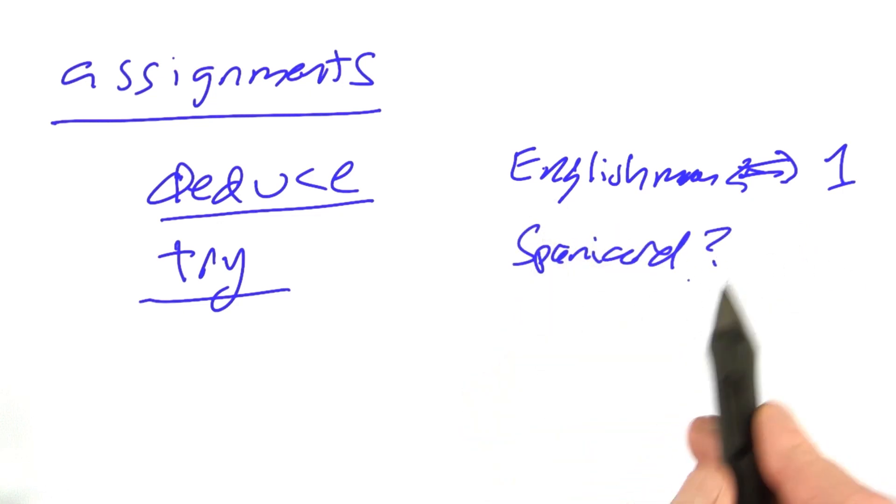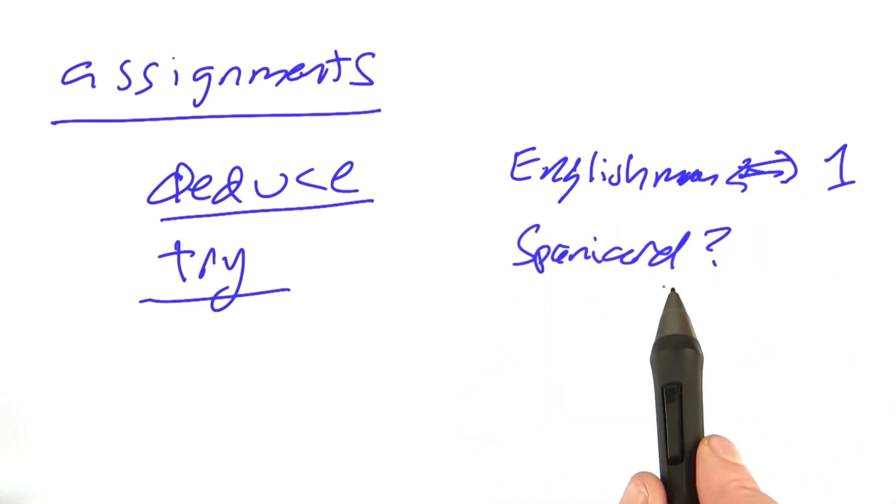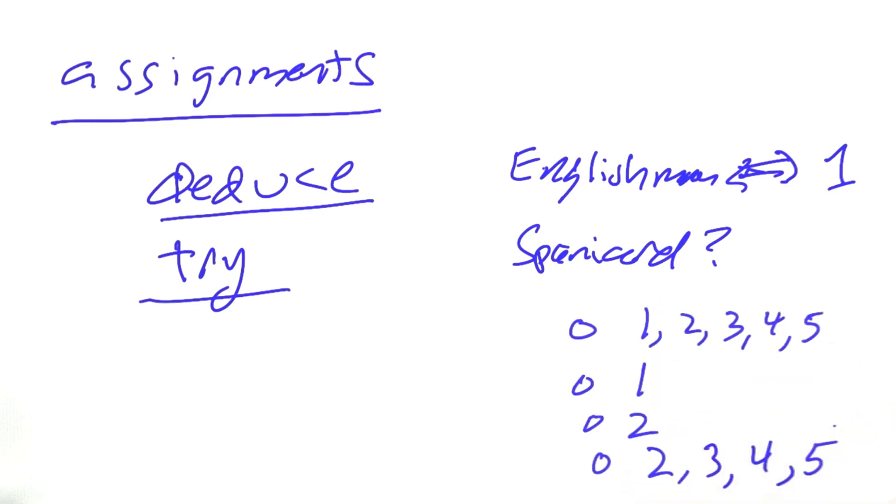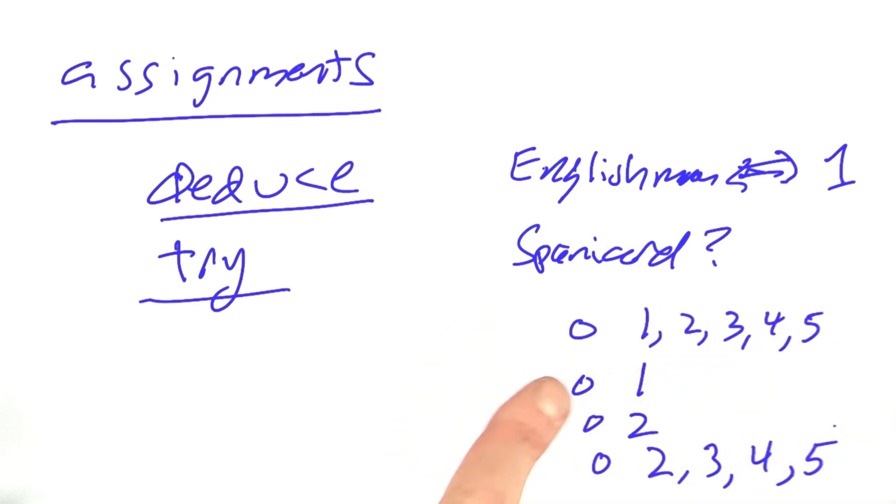Now, what about the Spaniard? If the Englishman is in house 1, what possibilities should we try for the Spaniard? You can give me your best answer. All the numbers, only 1, only 2, or 2, 3, 4, 5.